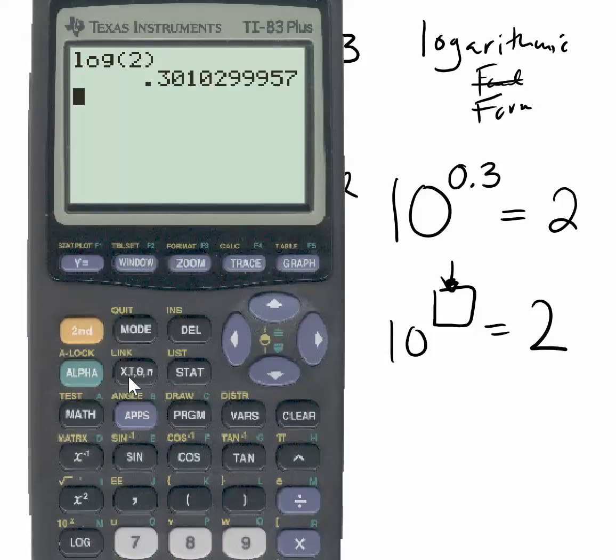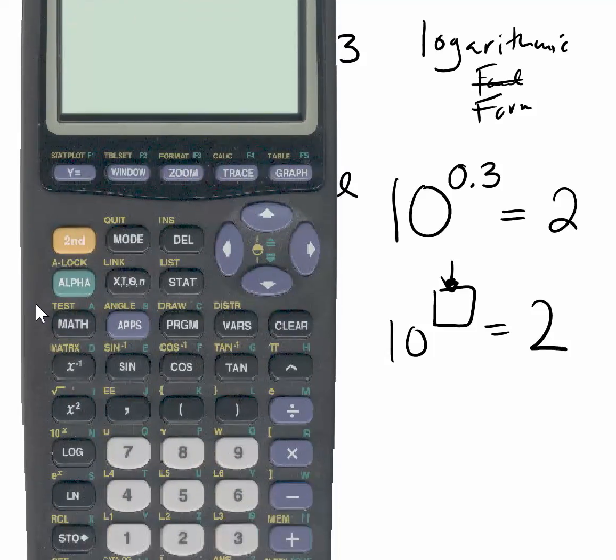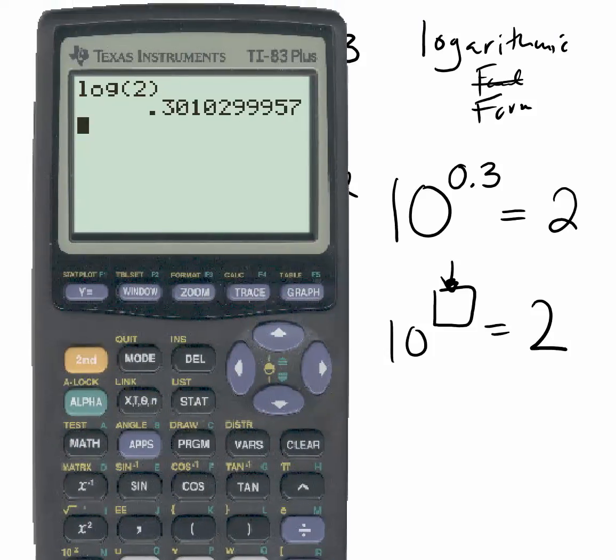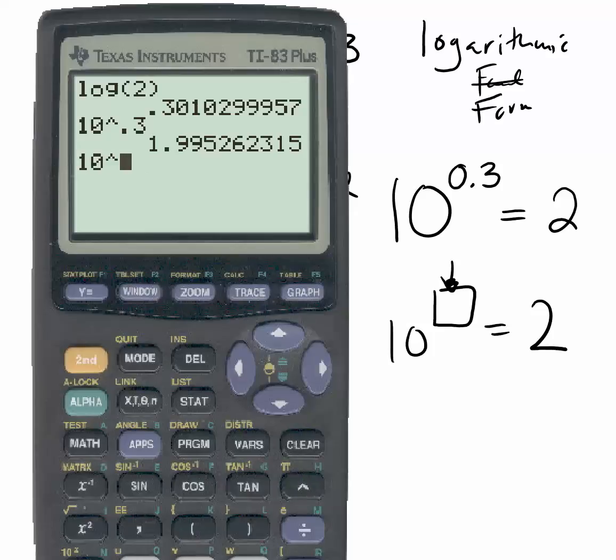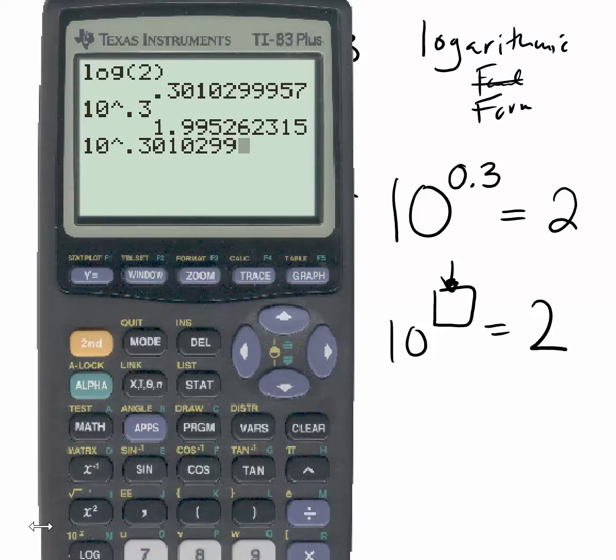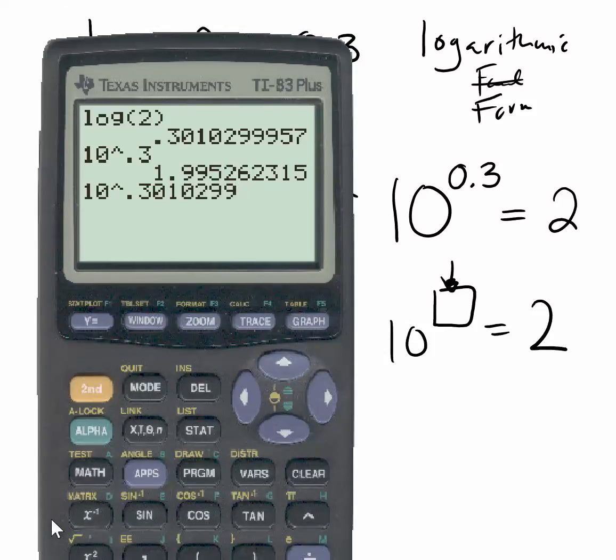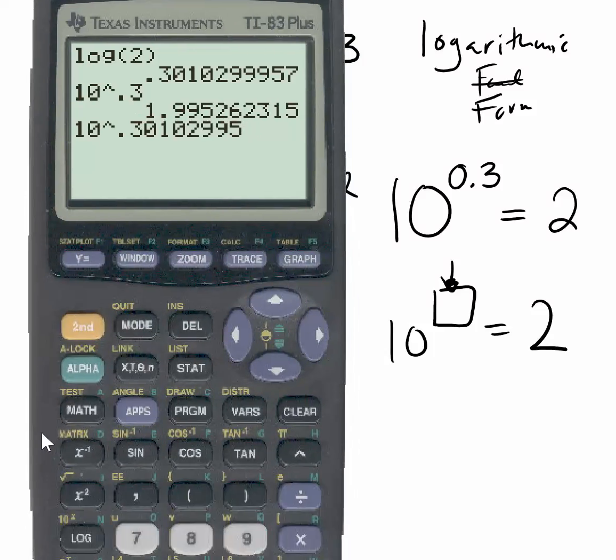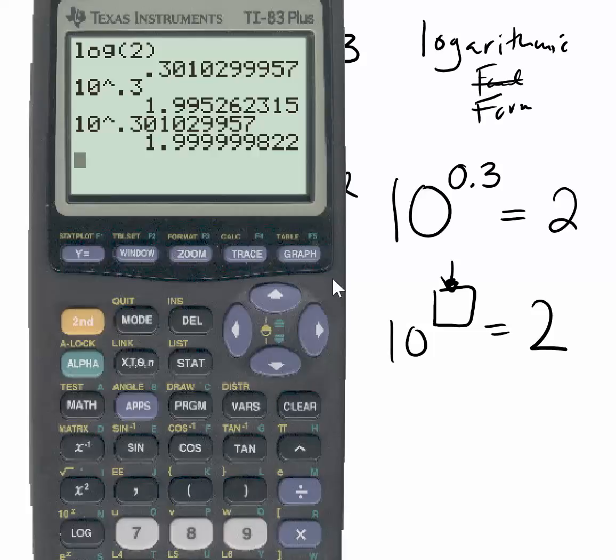And the answer is 0.3, again, approximately 0.3. But really what the calculator just did is this. It said the answer is 10 to the power of 0.3 gives you 2. Now it's not going to exactly 2. I'm just going to do it. It looks like 1.9957. Now as we put that in, I get very, very close to 2.